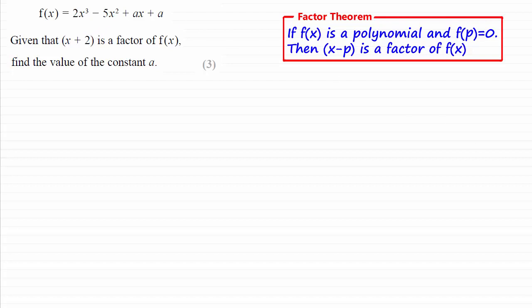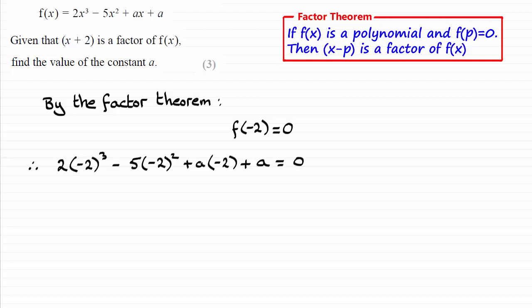So it's just a question then of substituting minus 2 in for x and equating this to 0 and solving for a. So if you substitute minus 2 in then, you're going to get this line. Work out the value of these terms here, and you'll find that you get this line.